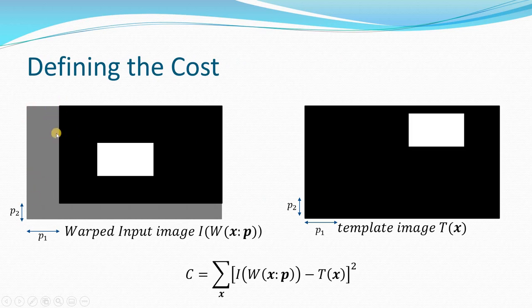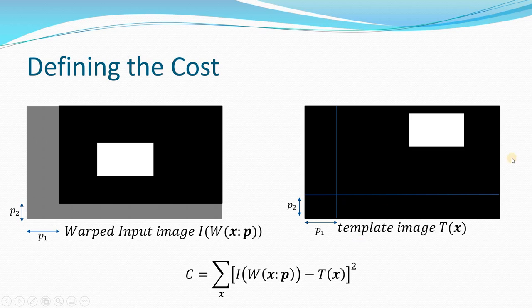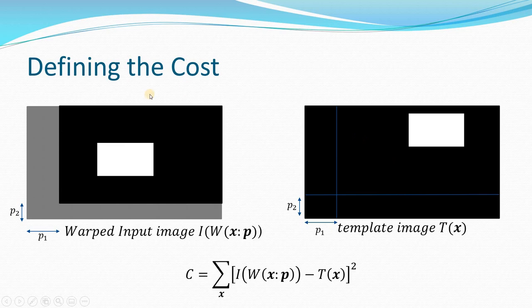When the image is translated, some information will not be available — that region will be blank. We will only consider the overlapping area. The template image is this image. Now we define the cost: we take the mean squared difference between the two images. The cost function is the difference between the warped image I(W(X; P)) and the template image T, squared and summed over all X.